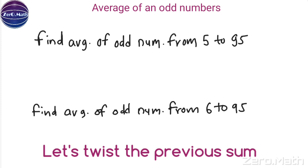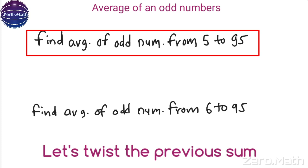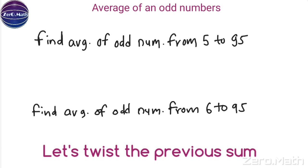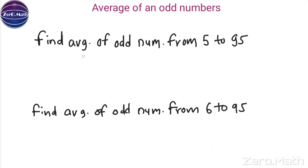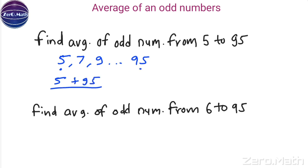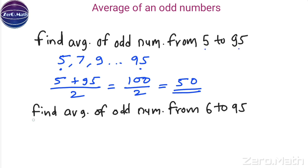Let us bring a twist. Find the average of odd numbers from 5 to 95. It is not necessary that the series starts with 1 — it can start with any odd number. The series here is 5, 7, 9, ... up to 95. First odd number is 5, last odd number is 95. Sum: 5 + 95 = 100, divided by 2 equals 50. So 50 is the average of odd numbers from 5 to 95.